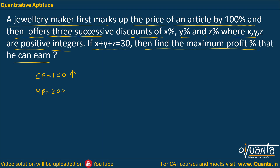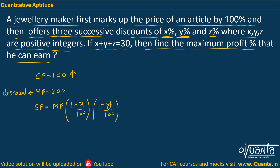Then we have to maximize the profit percent. SP comes out when we provide some discount on the mark price. When you provide these successive discounts of x%, y%, z%, the SP can be written as: from mark price, you first discount x%, that means you multiply by (1 − x/100). Then you apply y% discount, multiplying by (1 − y/100). Then you apply z% discount, multiplying by (1 − z/100). So this gives us our SP.